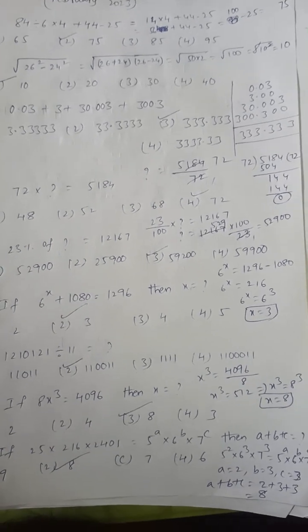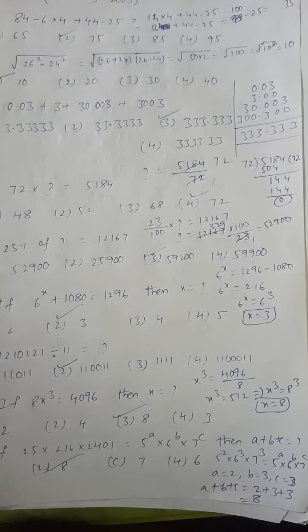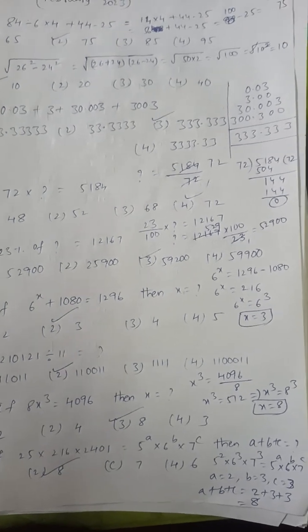Next: 8x cube equals 4096. 8 multiple goes to the right side and divides. So x cube equals 512.